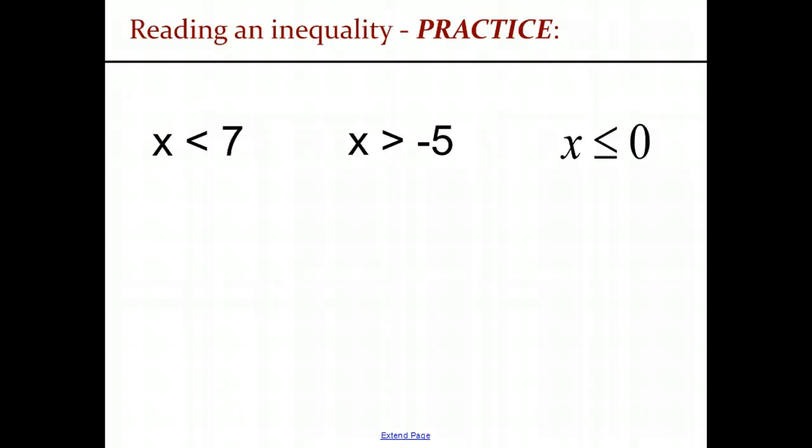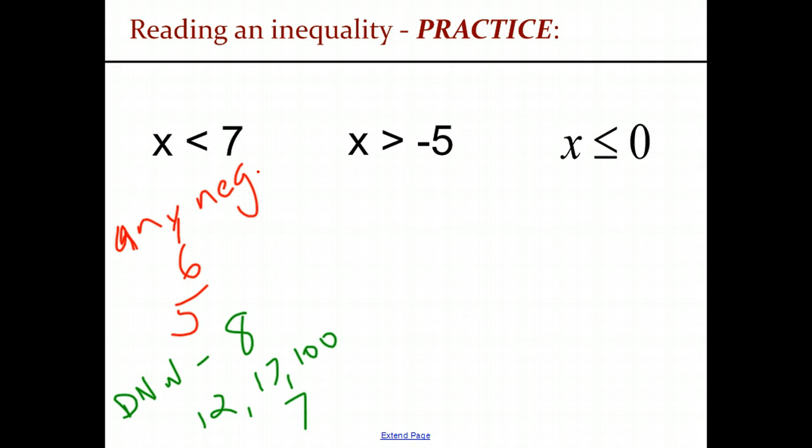So for x is less than 7, it can be any negative number works because any negative number is less than 7. On the other hand, we also have numbers like 6, 5, etc. Examples of things that don't work, we'll write them in green. 8, 12, 17, 100, etc. And even 7. 7 is not less than 7. 7 is equal to.